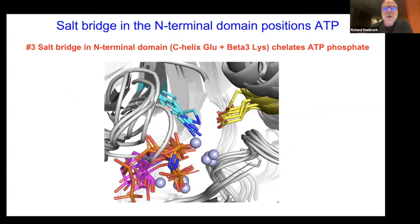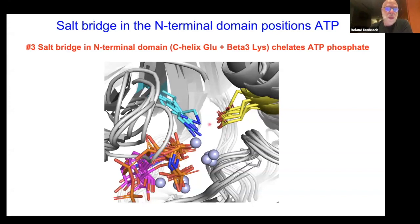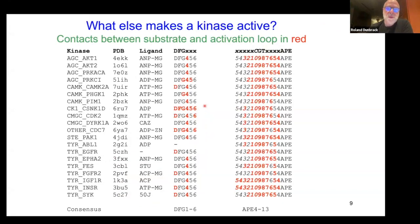The third criterion for active structures is the well-known lysine-glutamic acid salt bridge in the N-terminal domain: a lysine in the beta-3 strand and a glutamic acid in the C-helix form a salt bridge that helps chelate magnesium ions and ATP. Looking across all substrate-bound structures, there's a very good hydrogen bond distance between these two residues — so that's our third criterion. The first three criteria are pretty well known at this point.